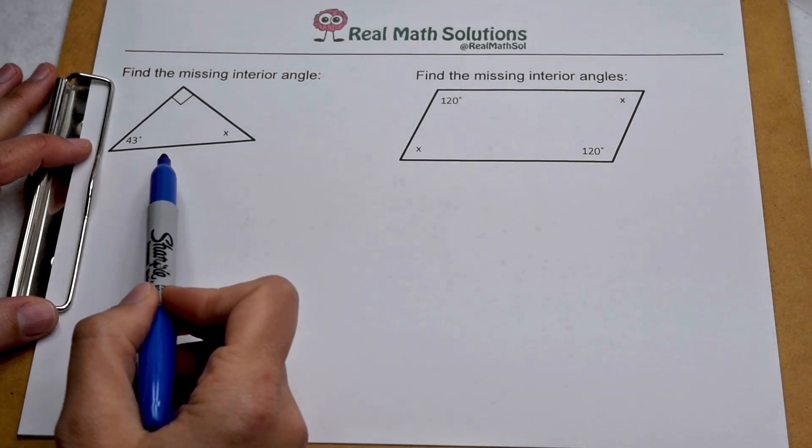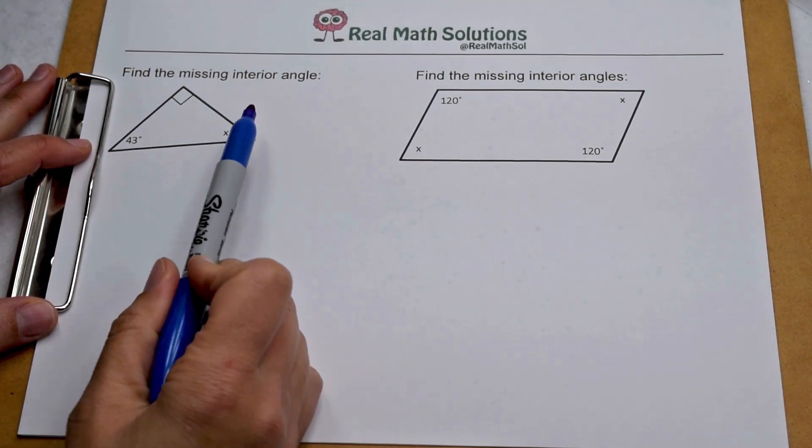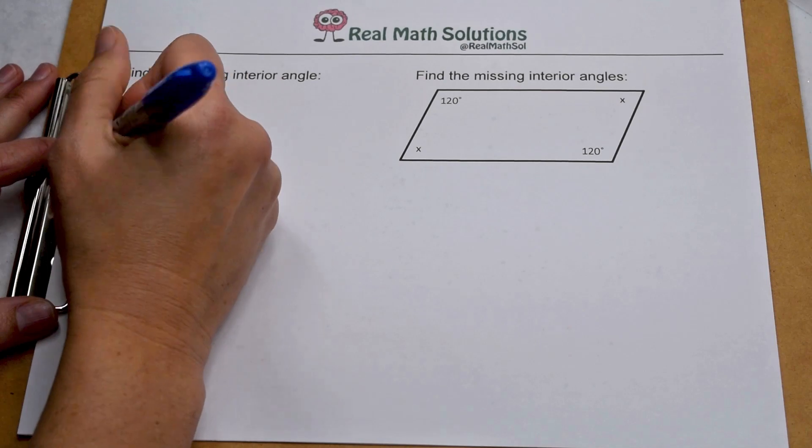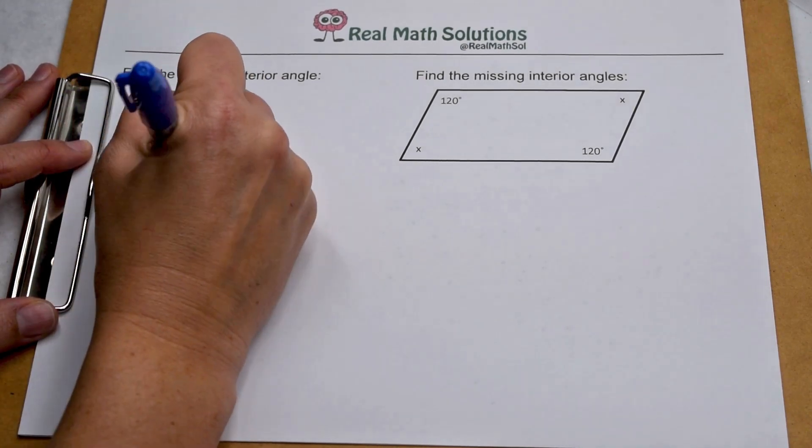Let's use what we know about interior and exterior angles to find our missing values. Here we have a triangle with one missing interior angle. We can start by finding the interior angle sum of a triangle.